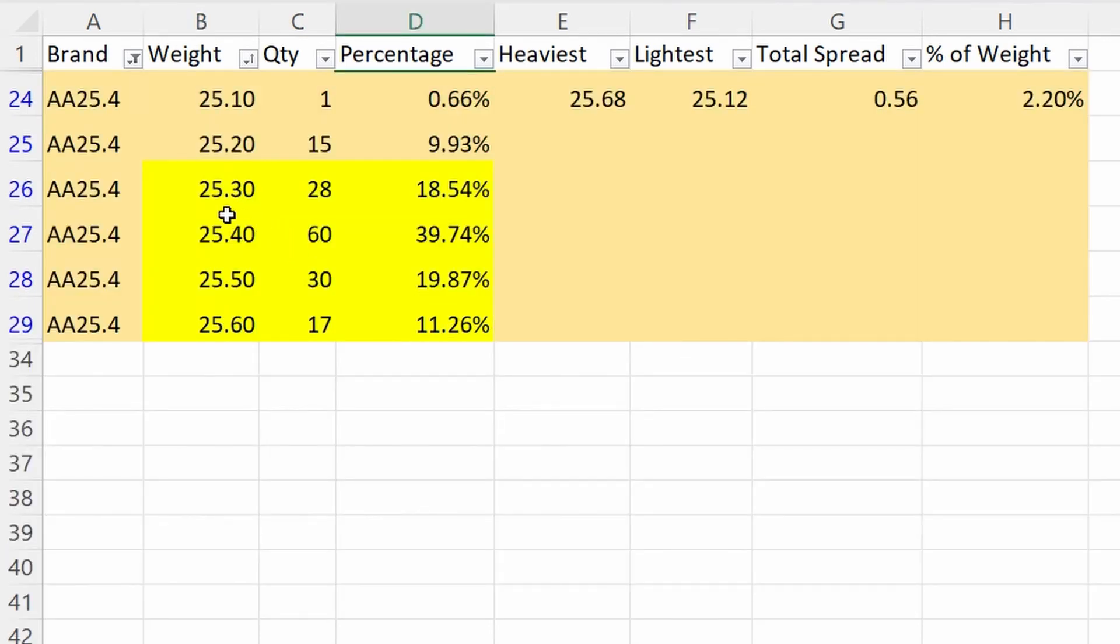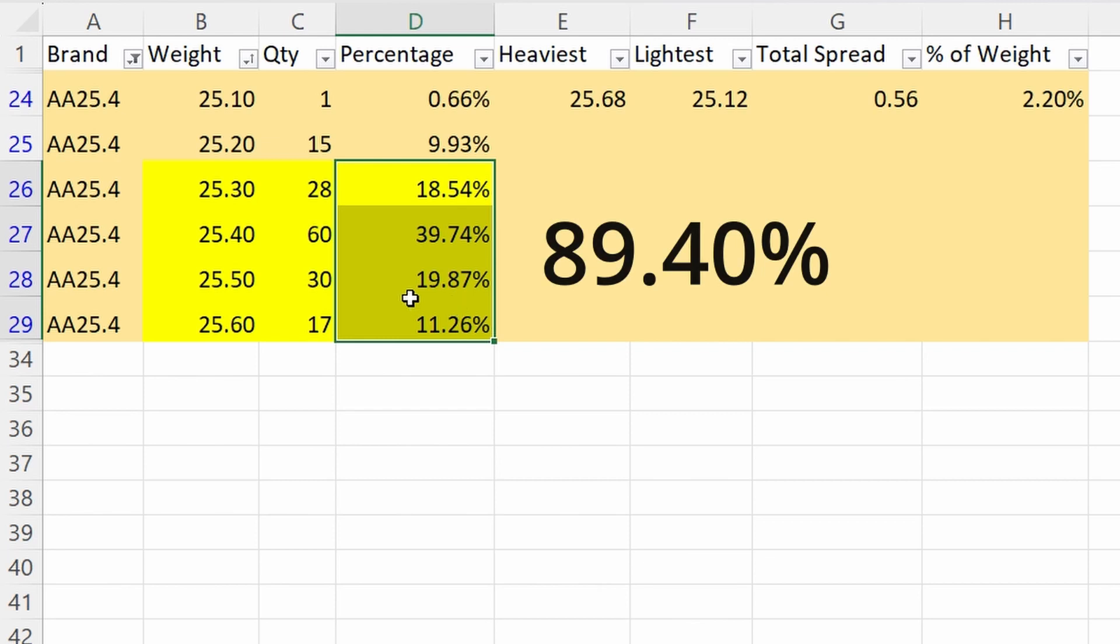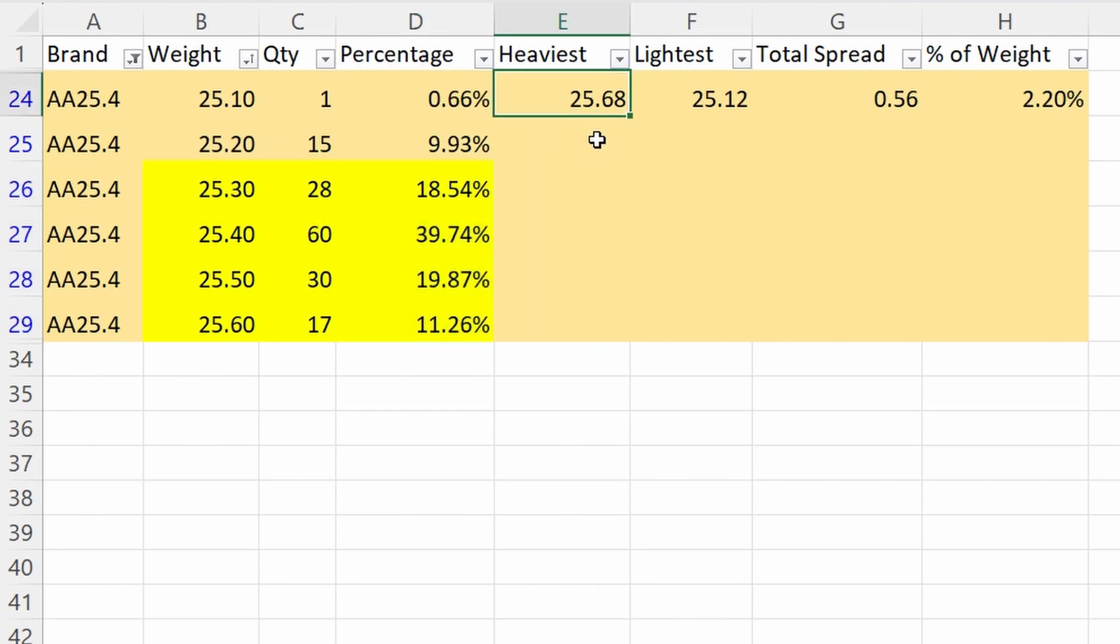Air Arms is similar to the FX in the fact that it takes four-tenths to capture 89.4%. However, it is different in the fact that the heaviest was 25.68, lightest was 25.12. Total spread of 0.56 of a grain, which gives us a 2.2% variability in weight. It's actually quite a bit tighter on total spread.